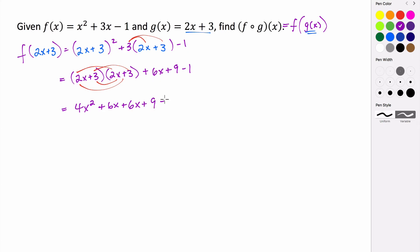And then plus all this other stuff that we have here. So plus 6x plus 9, minus 1. So now what we're going to do is we're going to combine our like terms and then that will be our new function. So we have 1, 2, 3, 6x's. We have a positive 9, another positive 9, and a negative 1. So we can kind of put these all together.